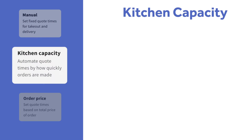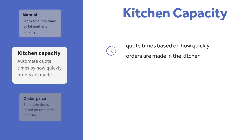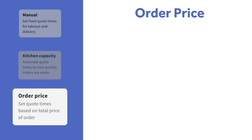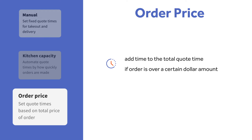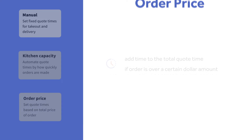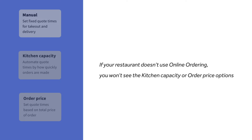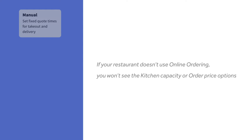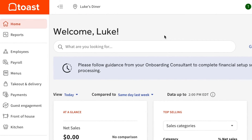Use the kitchen capacity option to configure quote times based on how quickly orders are made in the kitchen, to ensure orders placed on the POS and online ordering site are not exceeding the kitchen's ability to fulfill tickets during peak hours. Use the order price option to configure quote times based on the total price of orders. If your restaurant doesn't use Toast online ordering, you will not see kitchen capacity or order price options here.